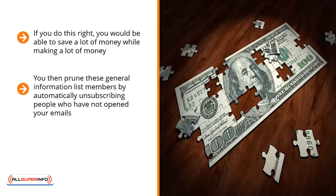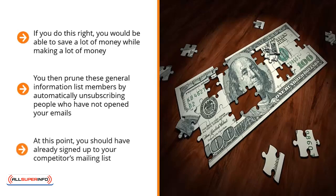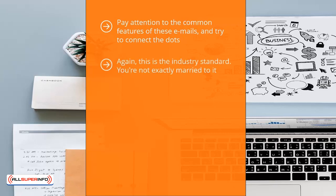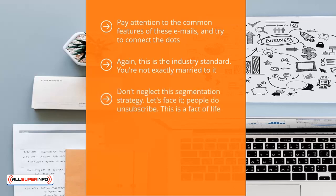Be aware of your competitors' industry standard list segmentation. At this point, you should have already signed up to your competitors' mailing lists and know the topics they send updates on. Pay attention to the common features of these emails and try to connect the dots — how do they segment their list members, and which of the general strategies are they using? Once you understand their segmentation strategy, you might want to start there. This is the industry standard, and you're not married to it — you can change it up and make improvements based on how your list behaves.